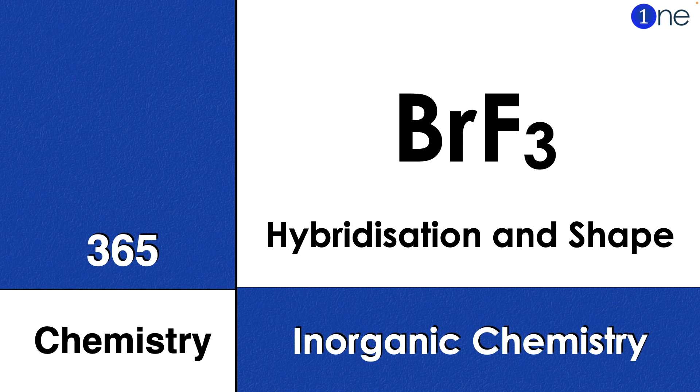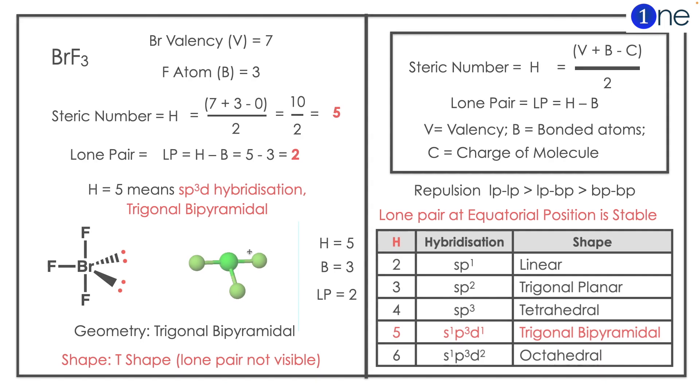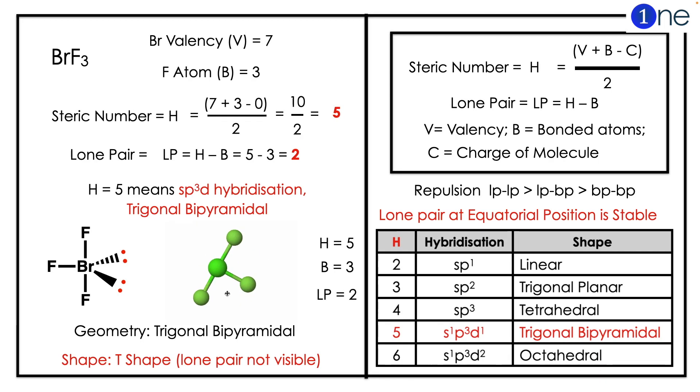Welcome to One Chemistry, this is the 365 Chemistry series with inorganic chemistry questions for you. Here you have bromine trifluoride, BrF3. You should find the hybridization and shape of it. To find the hybridization, you should know the steric number.